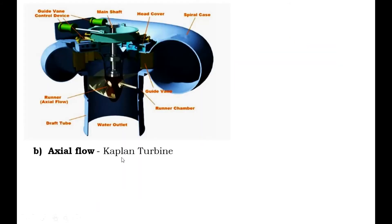The next type is axial flow — the example is the Kaplan turbine. The Kaplan turbine is a low head reaction turbine in which water flows axially. Water at high pressure enters the spiral casing through the inlet and flows over the guide blades. The water from the guide blades strikes the runner blades axially, imparting kinetic energy to the runner blades and causing rotation. The runner has only 4 to 6 blades. Water discharges at the center of the runner in the axial direction into the draft tube, which is L-shaped and is immersed in the tailrace.